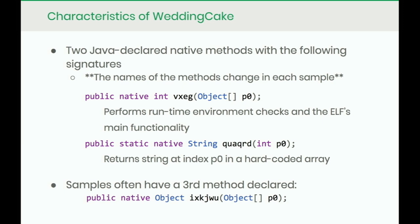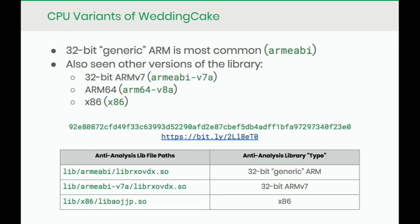In every version you will see the same method signatures — for example, VXCG returns an int and takes an object array. There are also many different CPU variants: the most common is 32-bit ARM (ARMEABI), but I've also seen 32-bit ARMv7, ARM64, and x86. One APK sample on VirusTotal includes three different CPU variants. Importantly, every single CPU variant has the same functionality — that does not change across any of them.